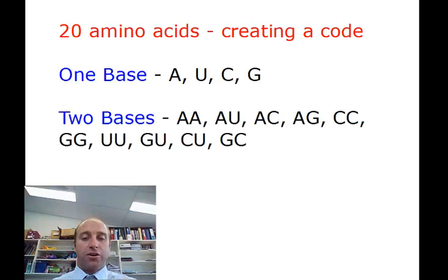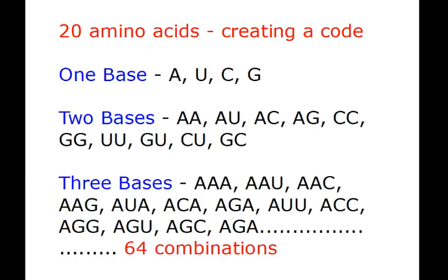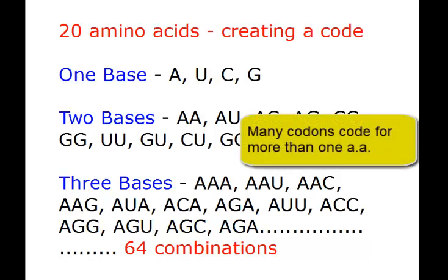If we use the two base code, we can get a few more combinations but we're not going to get the 20 combinations we need. So what we're going to find is we work with what's called a triplet code or a codon which uses three bases. So we're going to have 64 different combinations or different codons that we can have, but it also means we're going to have extras. So what we're going to have is we're going to have some that code for the same amino acids.